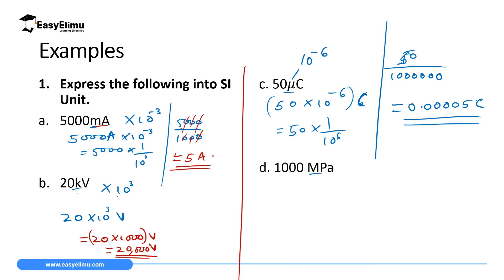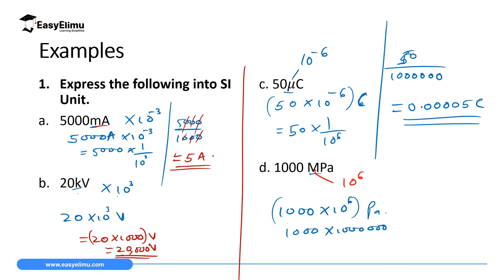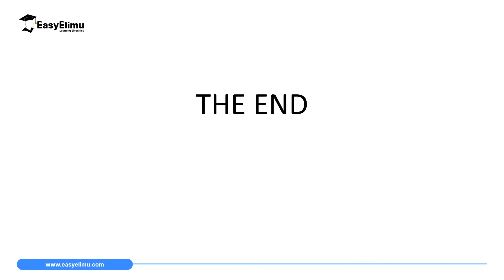The last one: 1000 megapascals. Mega means 10 to the power 6. So 1000 MPa equals 1000 times 10 to the power 6 pascals, which is 1000 times 1 million pascals — giving us 1 billion pascals. That is very simple and very important. That marks the end of our lesson today. In the next lesson, we will discuss the oil drop experiment.